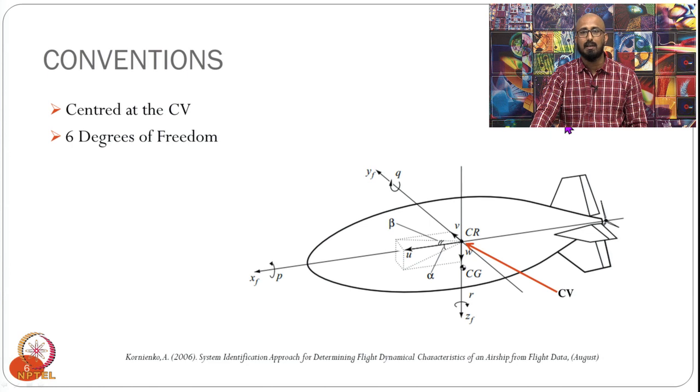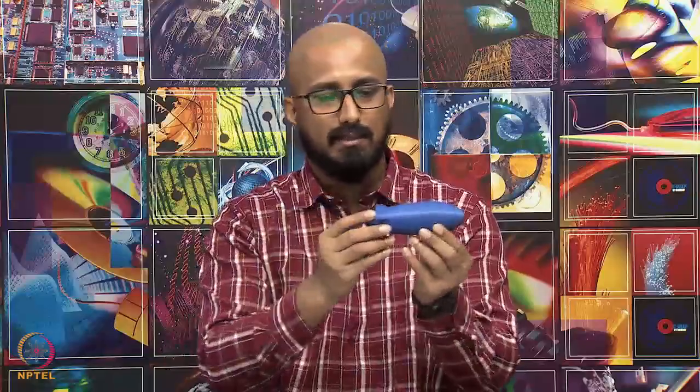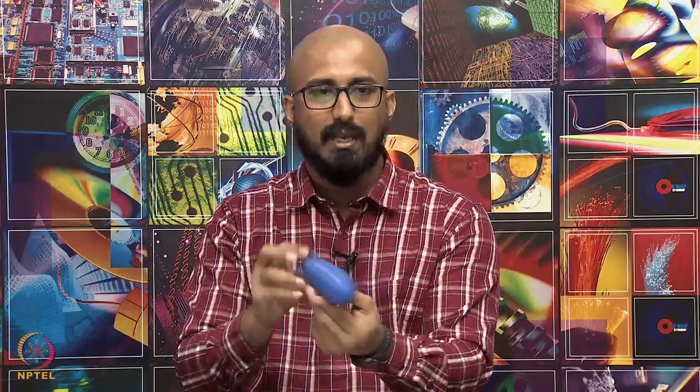Similar to other aircraft and any object moving in 3D space, airships have 6 degrees of freedom: 3 translational and 3 rotational. The 3 translational motions are along the x-axis, the lateral y-axis, and the vertical z-axis. The rotational motions are roll about the x-axis, pitch about the y-axis, and yaw about the z-axis.